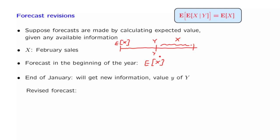What should your new forecast be? Well, once you have this information in your hands, your new forecast should be the expected value of X, given the specific available information that you have. So this is the revised forecast as calculated at the end of January.